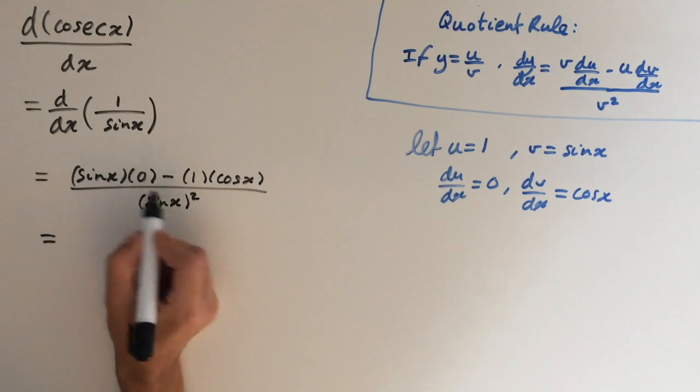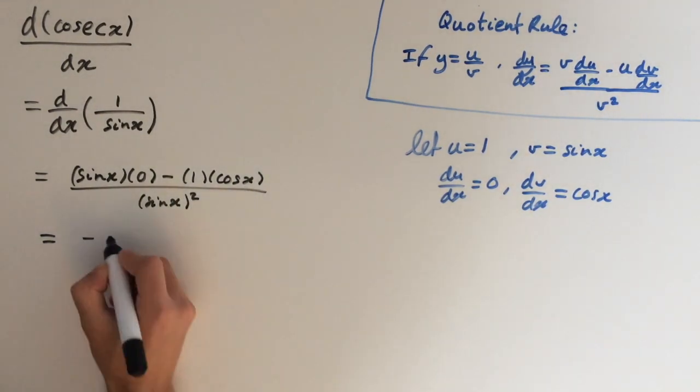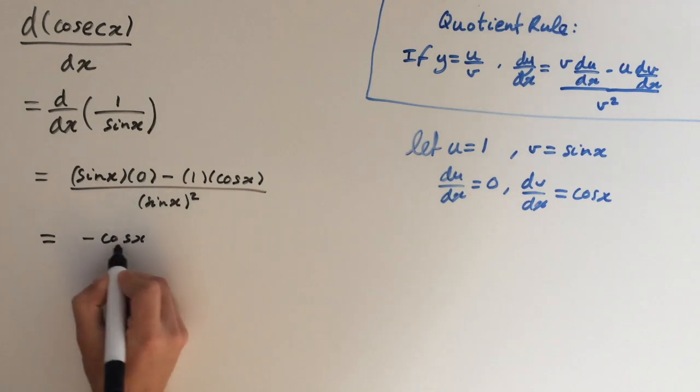So 0 times sine of x is obviously just 0, and minus 1 times cosine of x is minus cosine of x. And on the denominator we have sine squared of x.